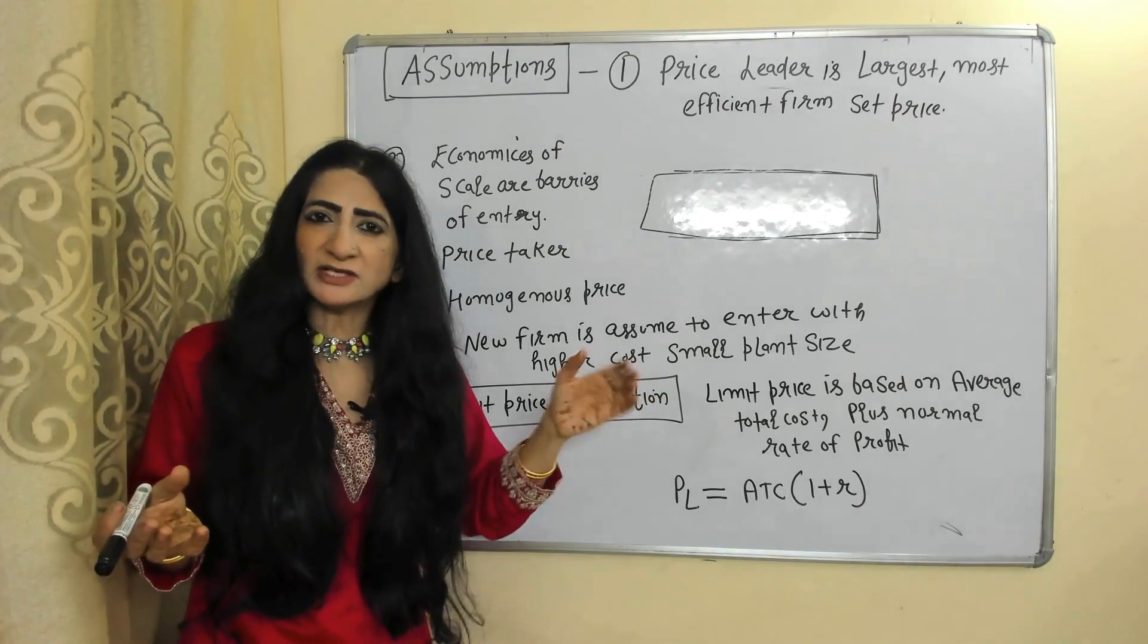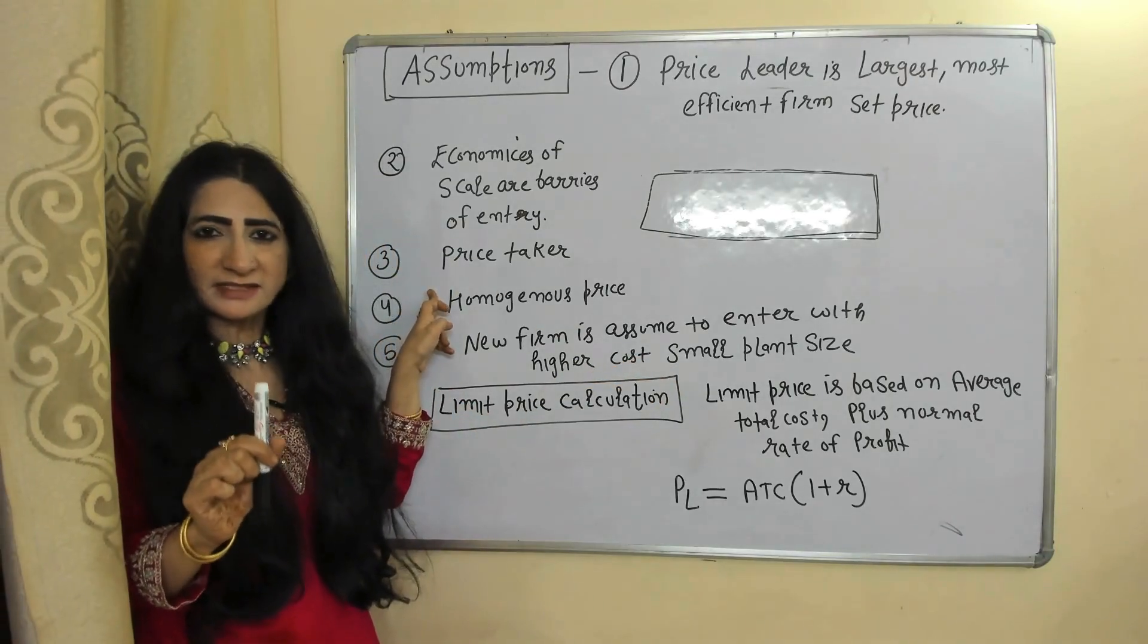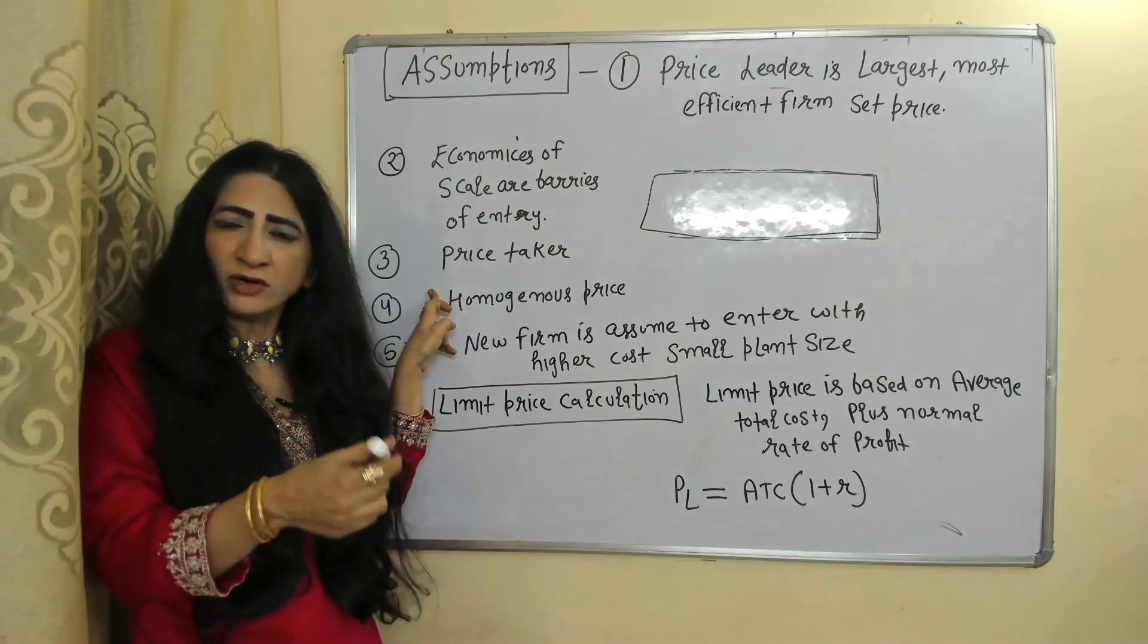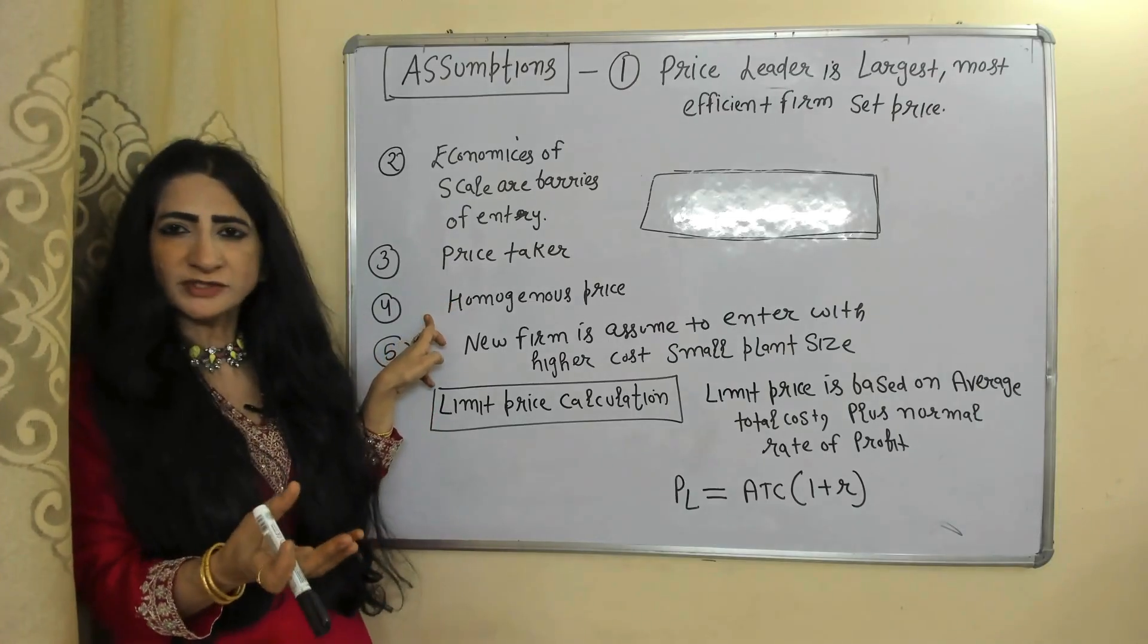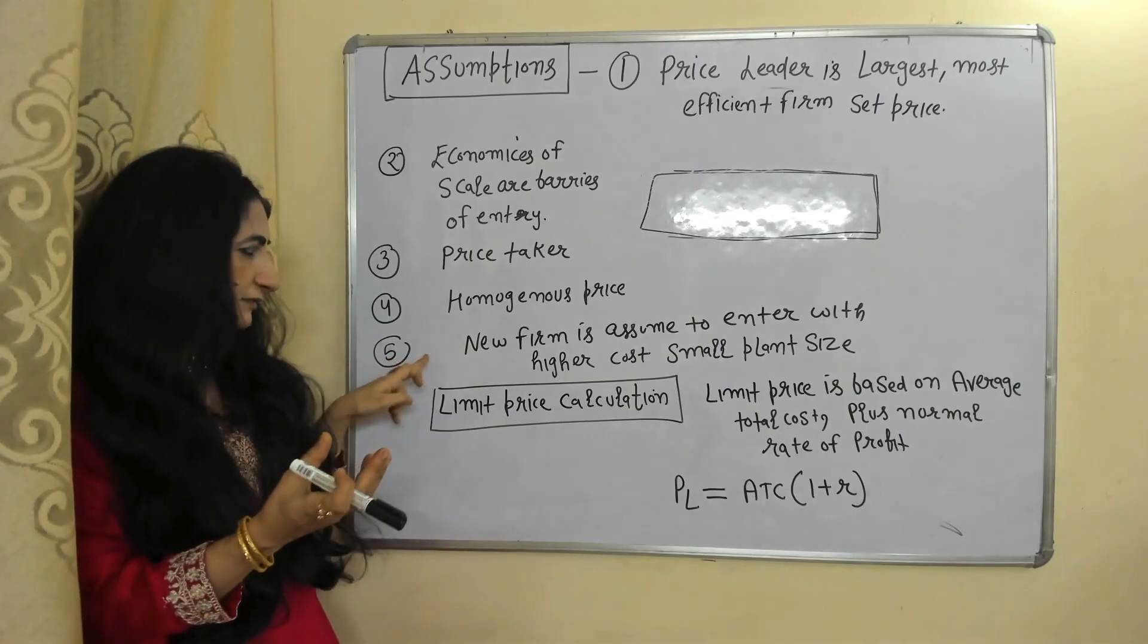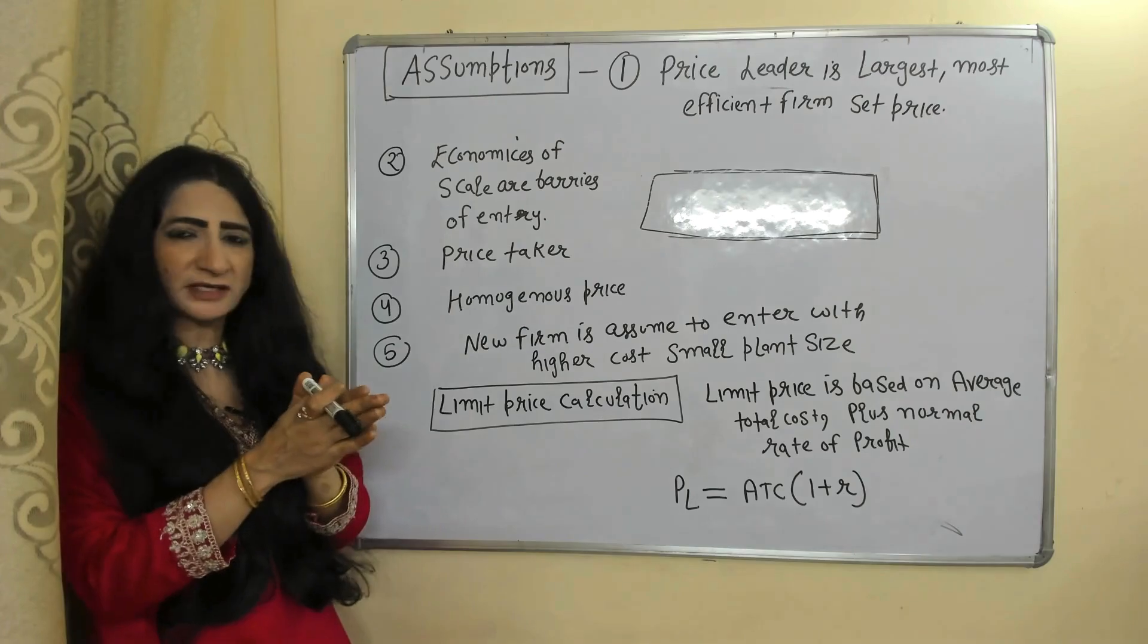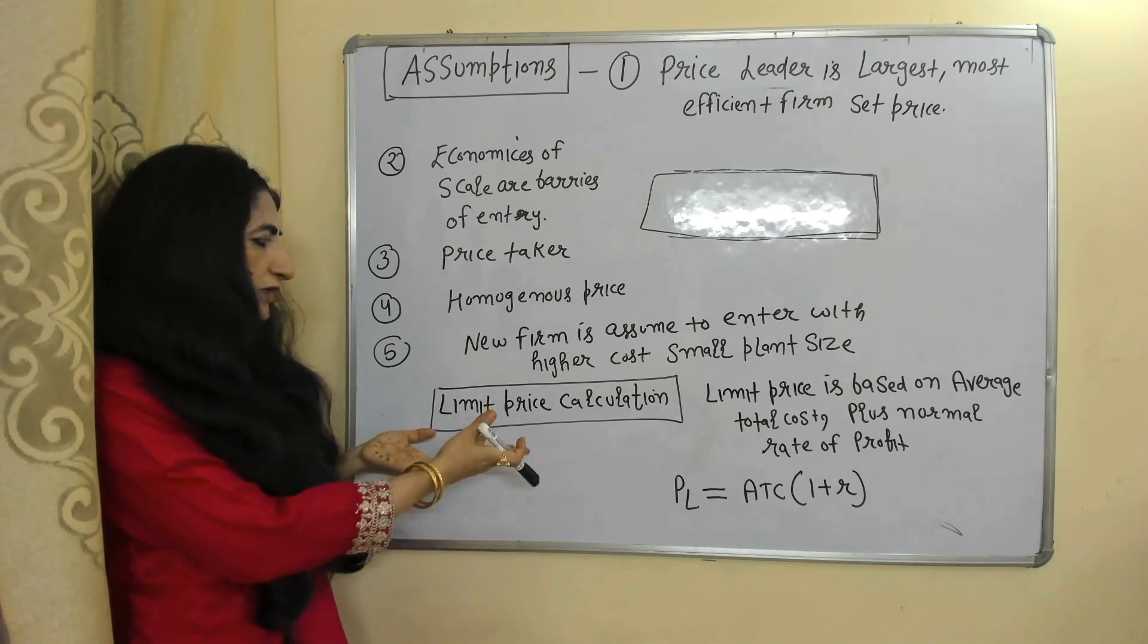Small scale firms can't receive economies of scale, eventually it becomes a barrier to entry. Price taker: price is decided by leader firm, all other firms in industry will accept the price. Homogeneous product: all firms in industry have the same type of product. New firms assume to enter with higher cost and with small plant size.